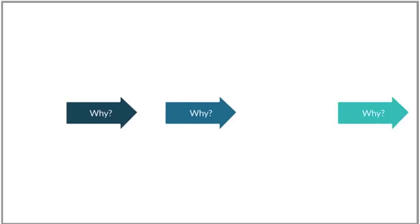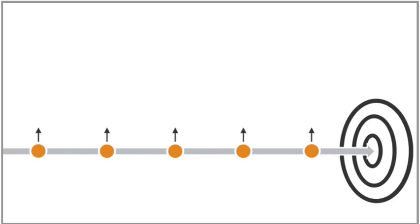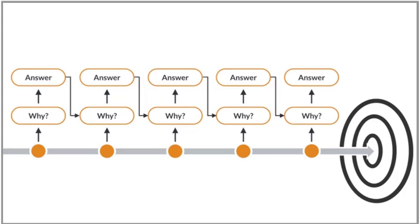The 5 Whys will typically start with the question, why did this problem or deviation occur? When you have the answer to this first why question, you ask a follow-on question that also begins with why, but uses the information provided in the previous answer. This is repeated until you understand the problem.